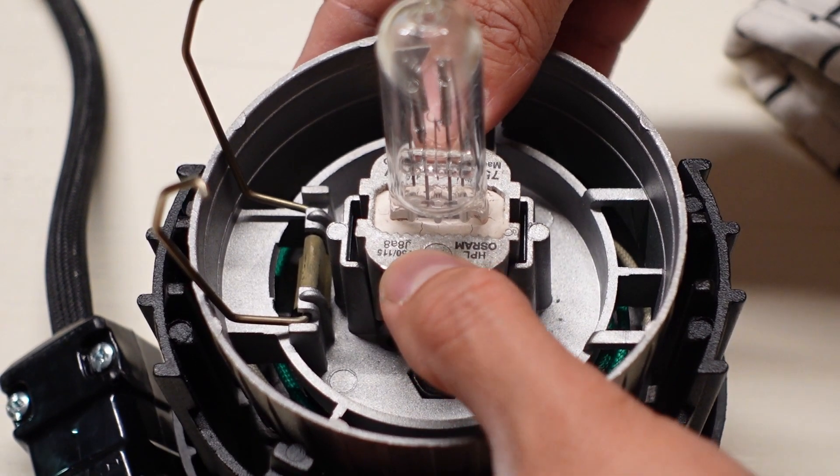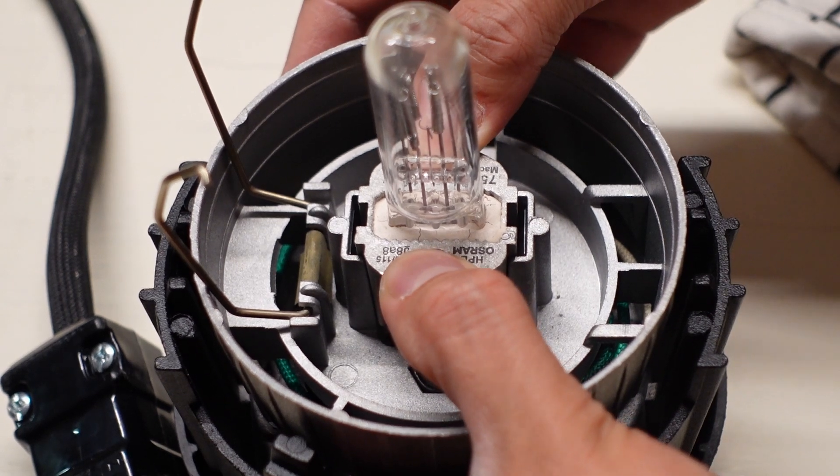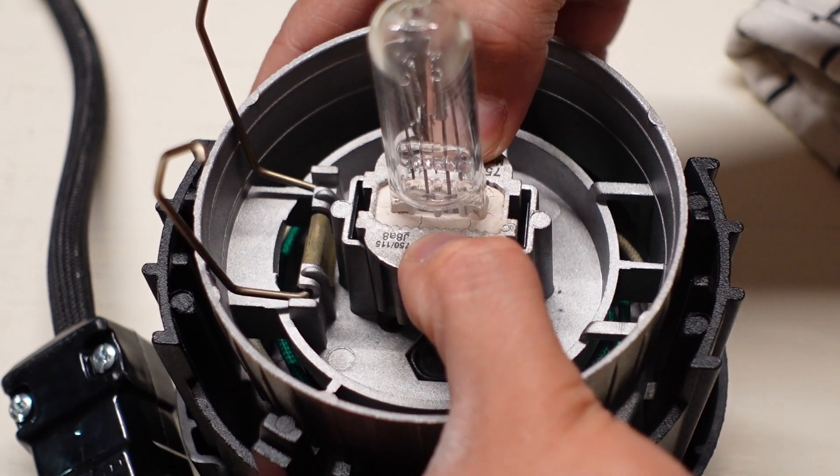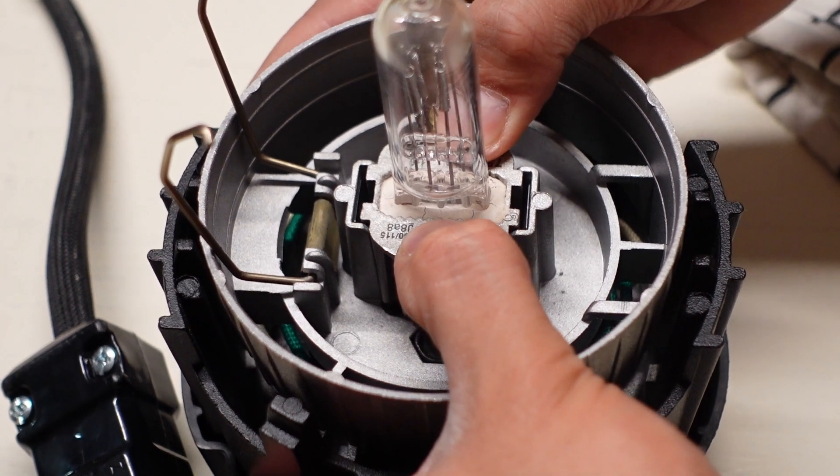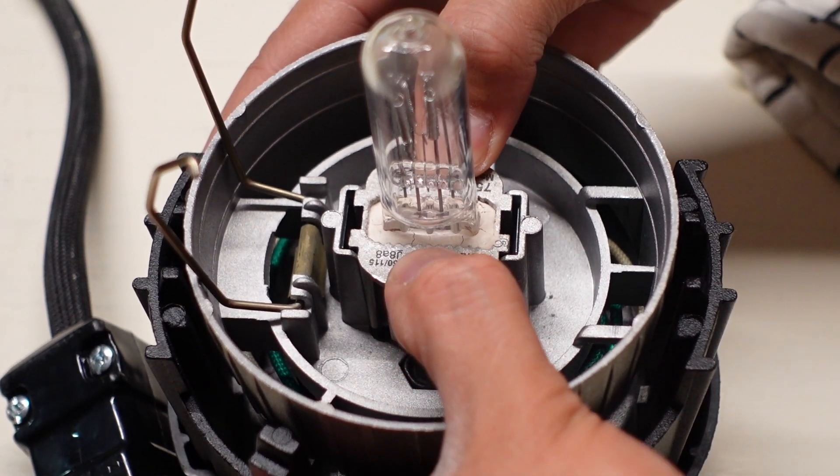To put the bulb back in, you just have to align the three holes, press it in with both thumbs on the base of the bulb, and then pinch and lock the bulb fastener.